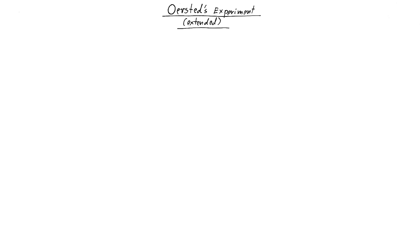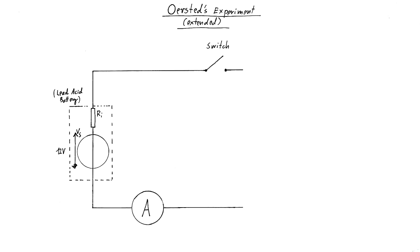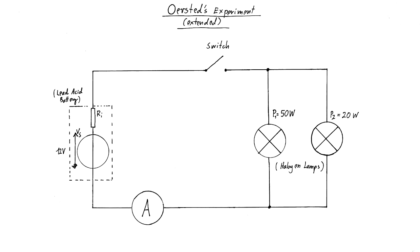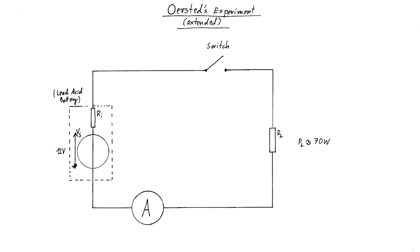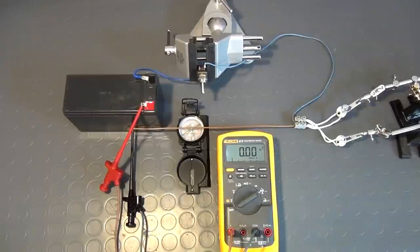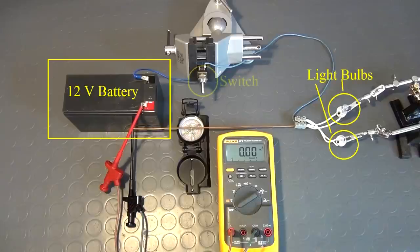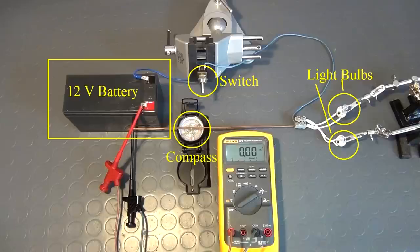For the first setup, we have a 12V battery acting as a voltage source. Via two copper wires and a switch, it is connected to two light bulbs which are connected in parallel. The first light bulb is rated for 50W at 12V, while the second one is rated for 20W at 12V. They simply act as a resistive load for an output power of around 70W. The copper wires are placed within some distance to each other, and in addition, a compass is brought near to one of the wires.